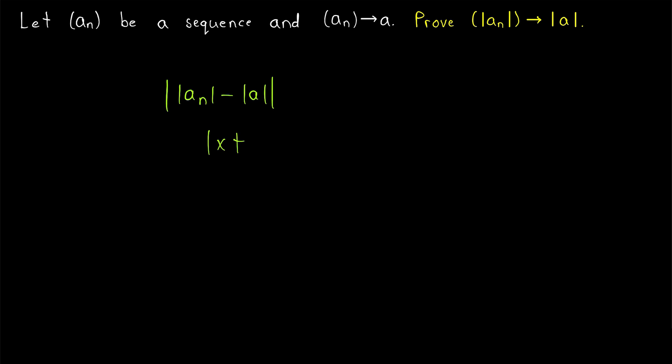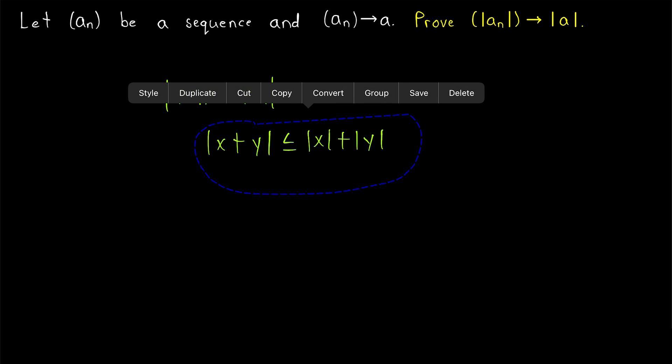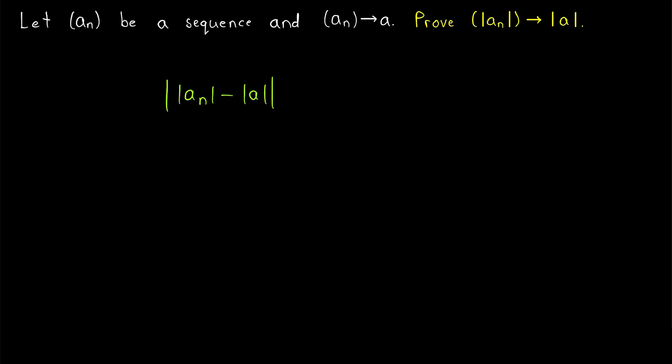Recall that the ordinary triangle inequality tells us that the absolute value of a sum is less than or equal to the sum of the individual absolute values. But the reverse triangle inequality tells us that the absolute value of the difference of absolute values is less than or equal to the absolute value of their difference without the internal absolute value bars. I'll leave a link in the description to my lessons proving the triangle inequality theorems.